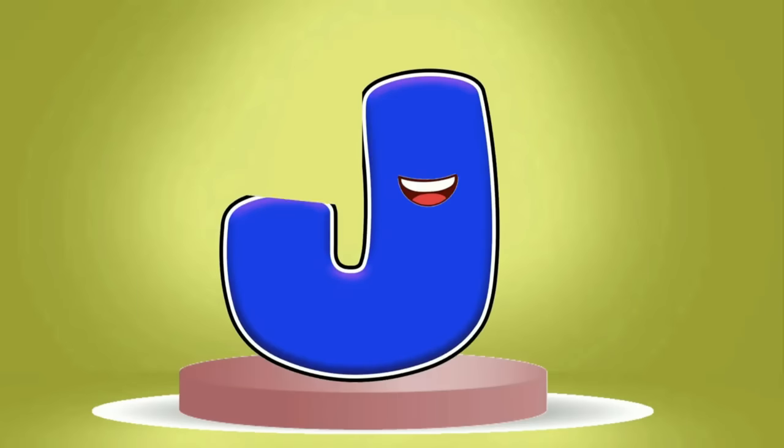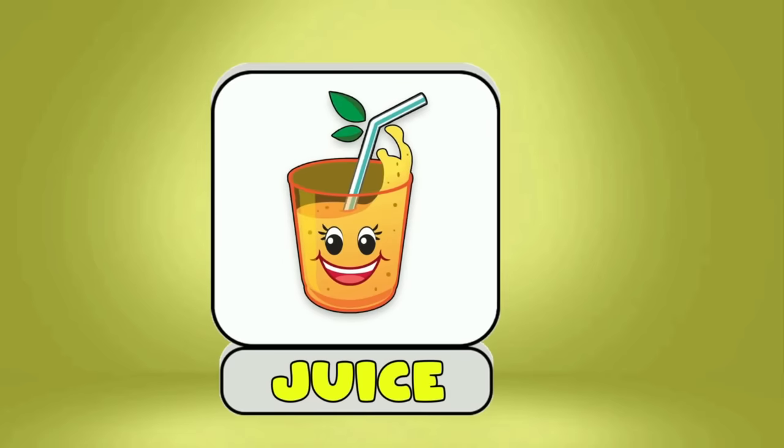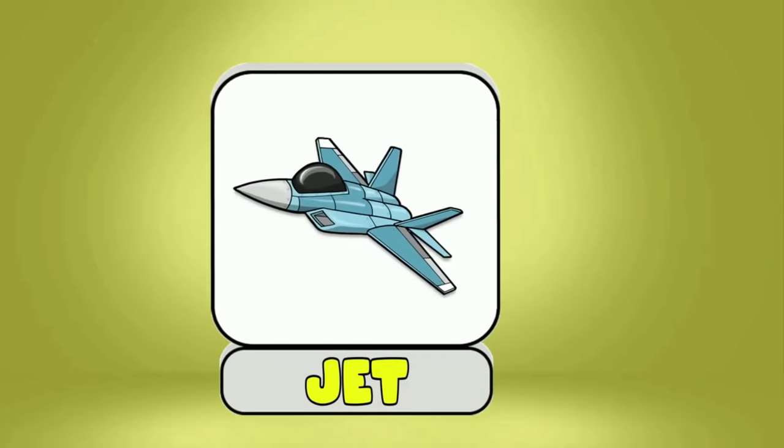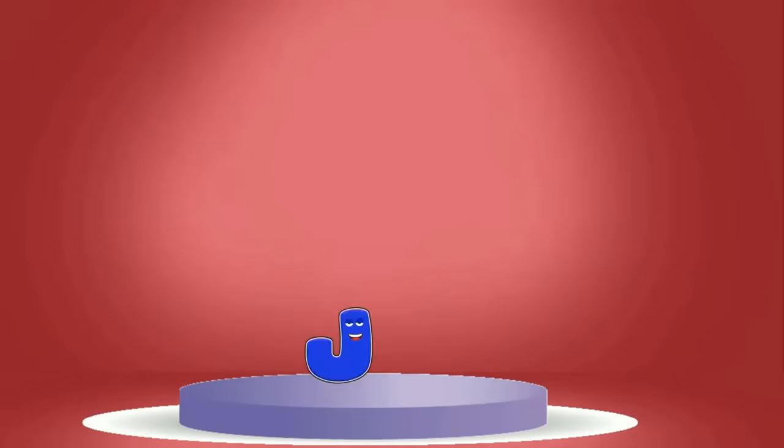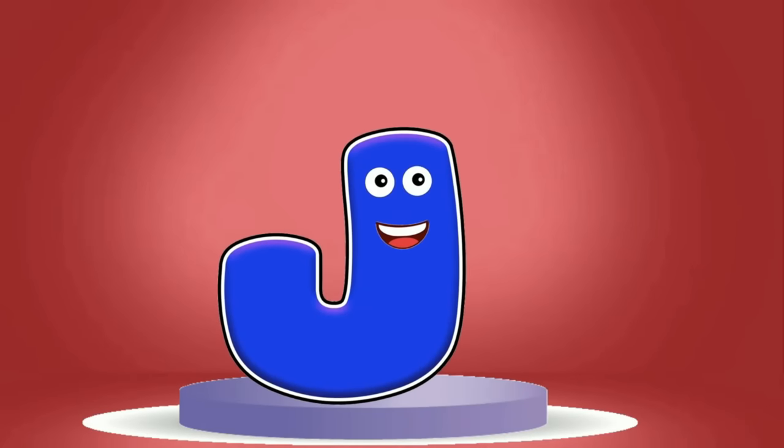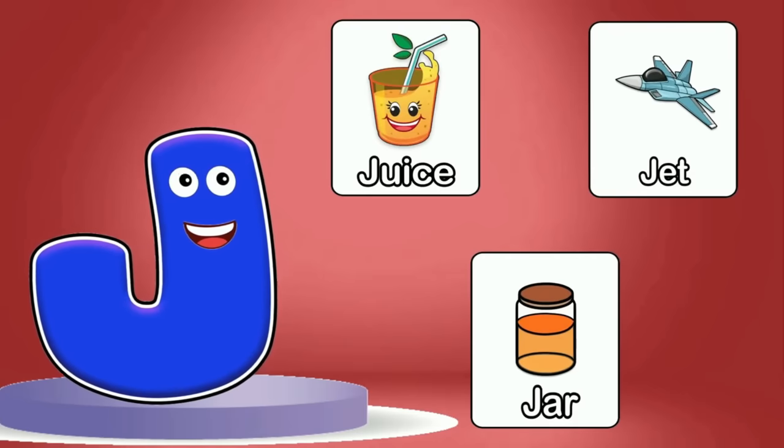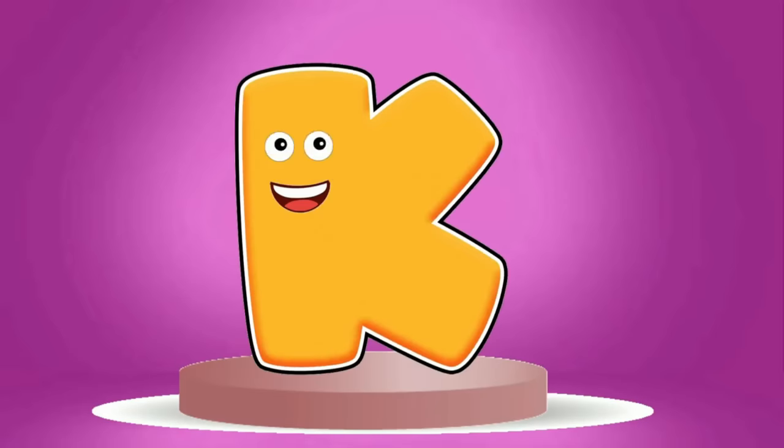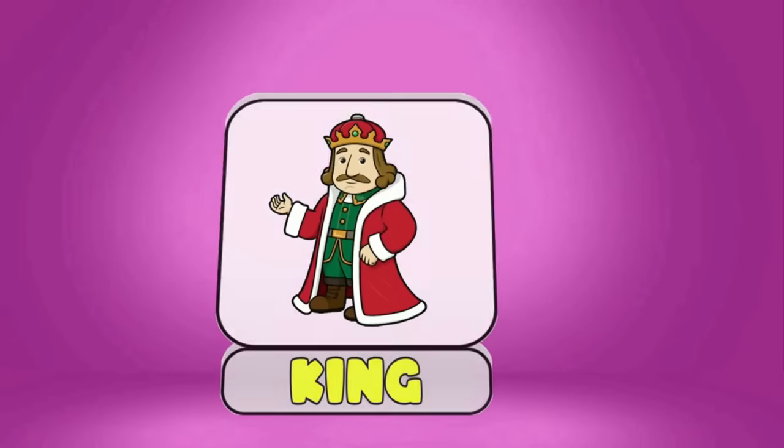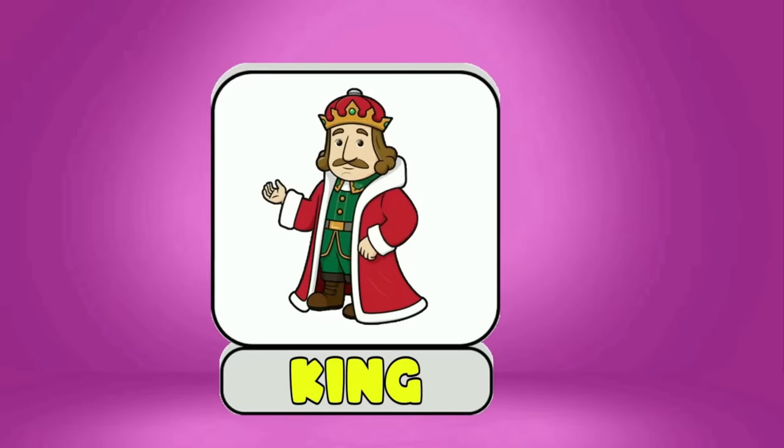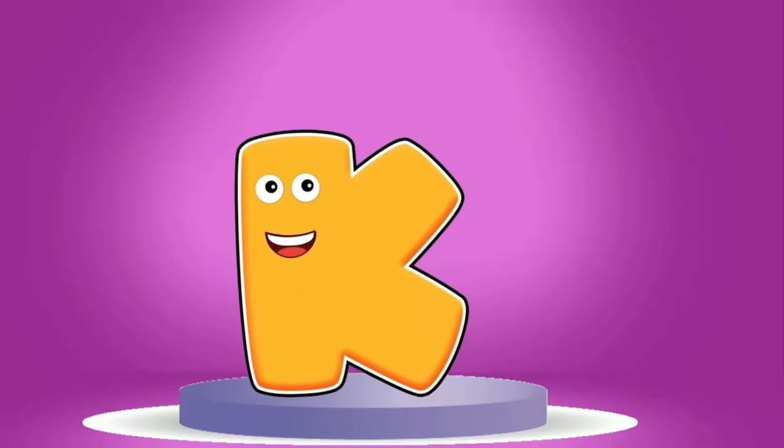This is I. I is for Ink, Igloo, Ice Cream. This is J. J is for Juice, Jet, Jar. This is K. K is for Kangaroo, King, Kid.